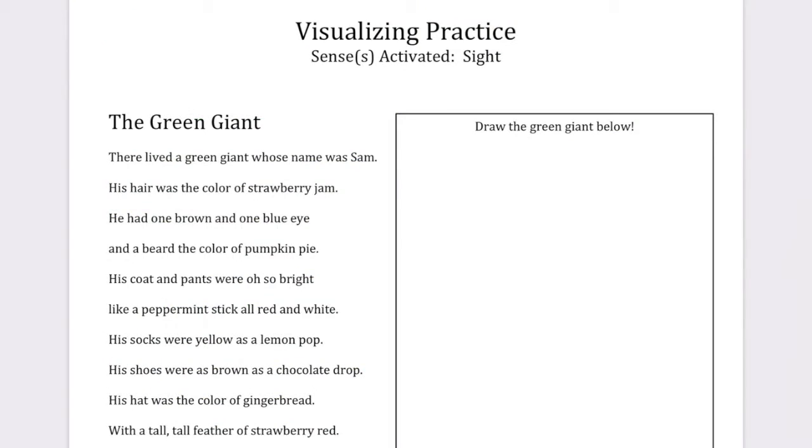For our first example with visualizing, all I want you to concentrate on is the sense of sight. So as I read this poem, The Green Giant, just try to imagine as clearly as you can in your mind what this giant looks like.